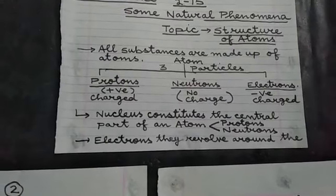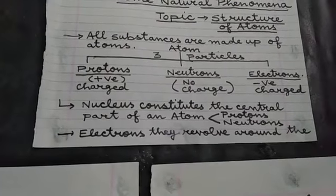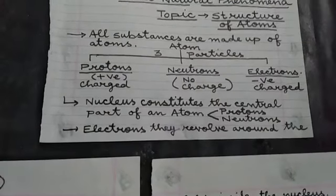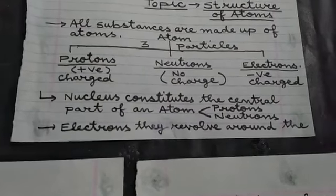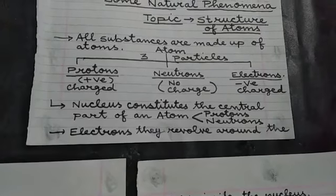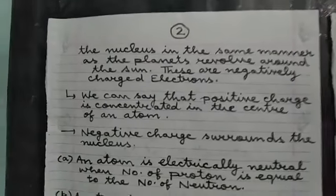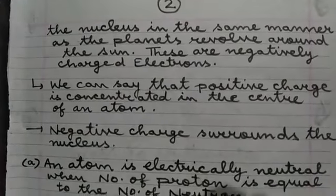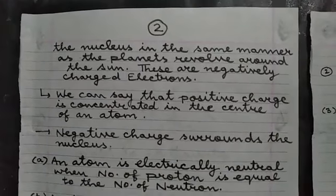In the center of the atom, nucleus is present. And this nucleus consists of two fundamental particles, that is the protons and the neutrons. Whereas the electrons, which are the negatively charged fundamental particles of an atom, they revolve around the nucleus in the same manner as the planets revolve around the sun in the solar system.